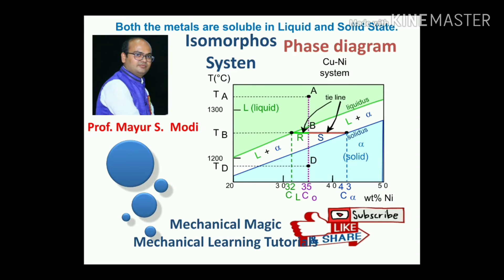Welcome to my YouTube channel, Mechanical Magic Mechanical Learning Tutorials. Today we will be discussing the isomorphous system, where both metals are soluble in the liquid state and solid state. In the case of binary metal alloys, here it will be the copper and nickel system — both are soluble in the liquid state and solid state.